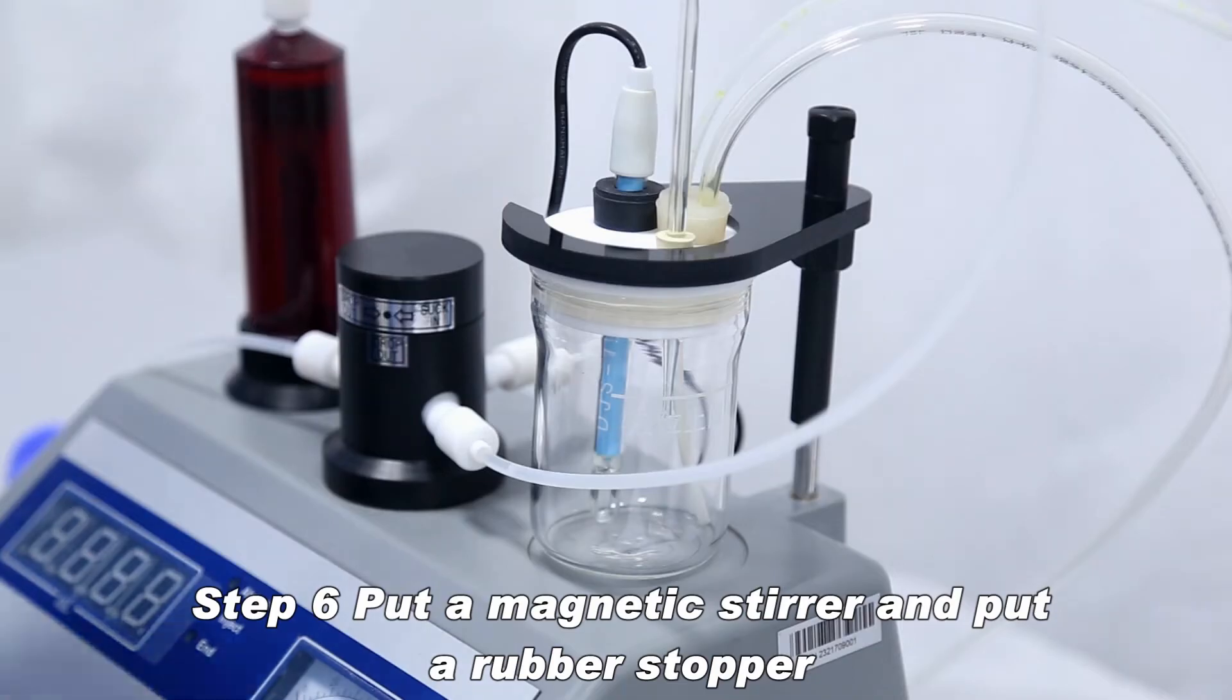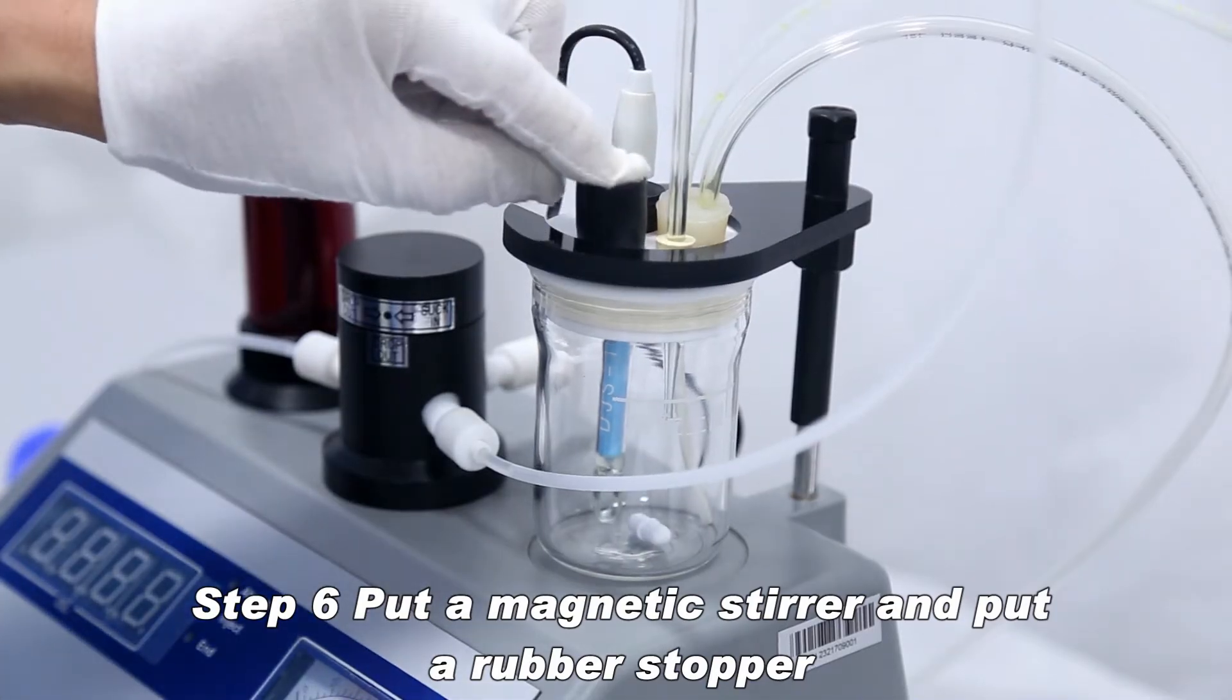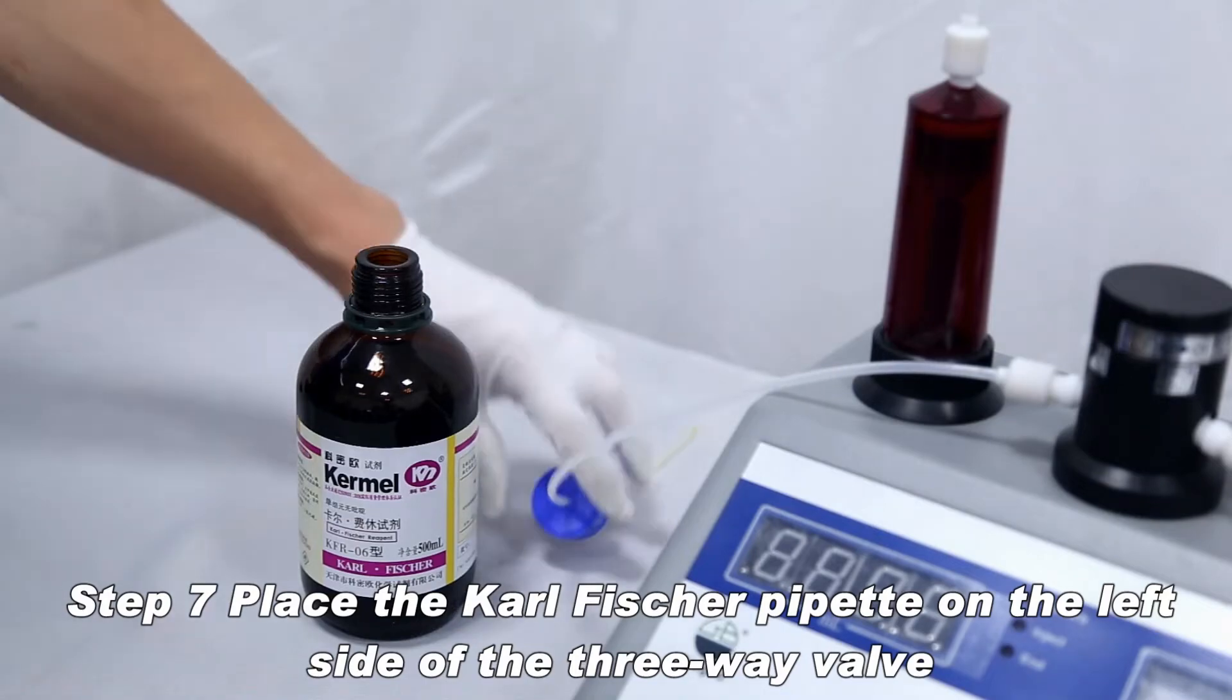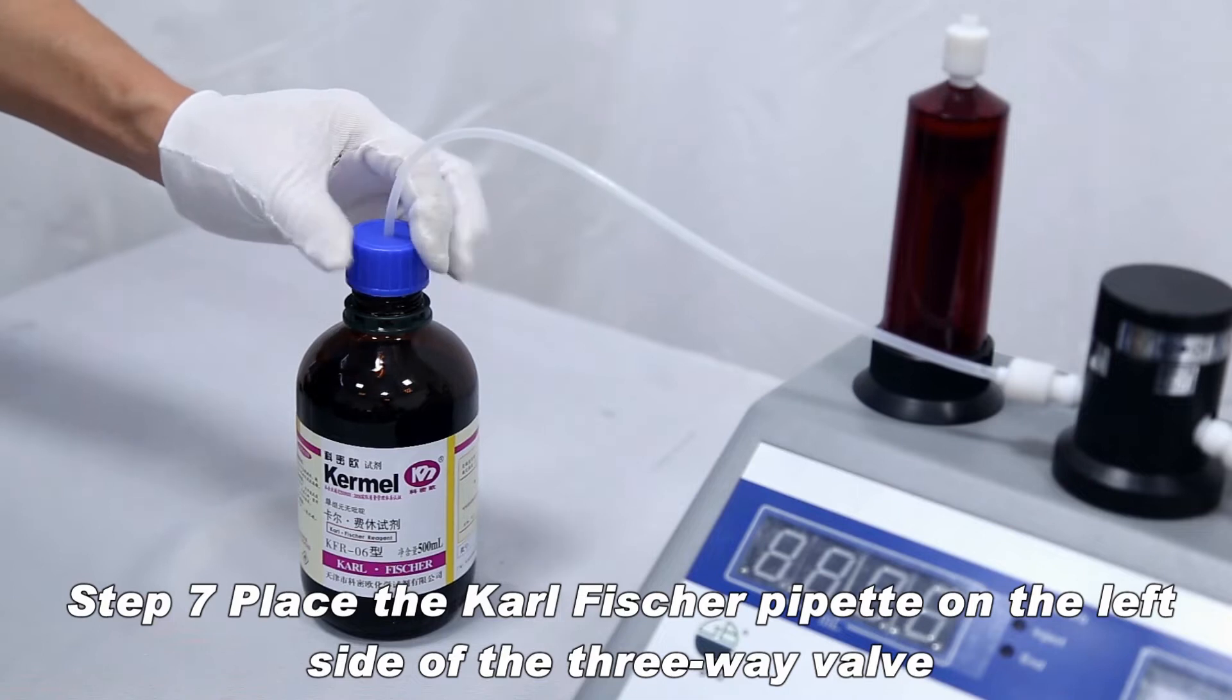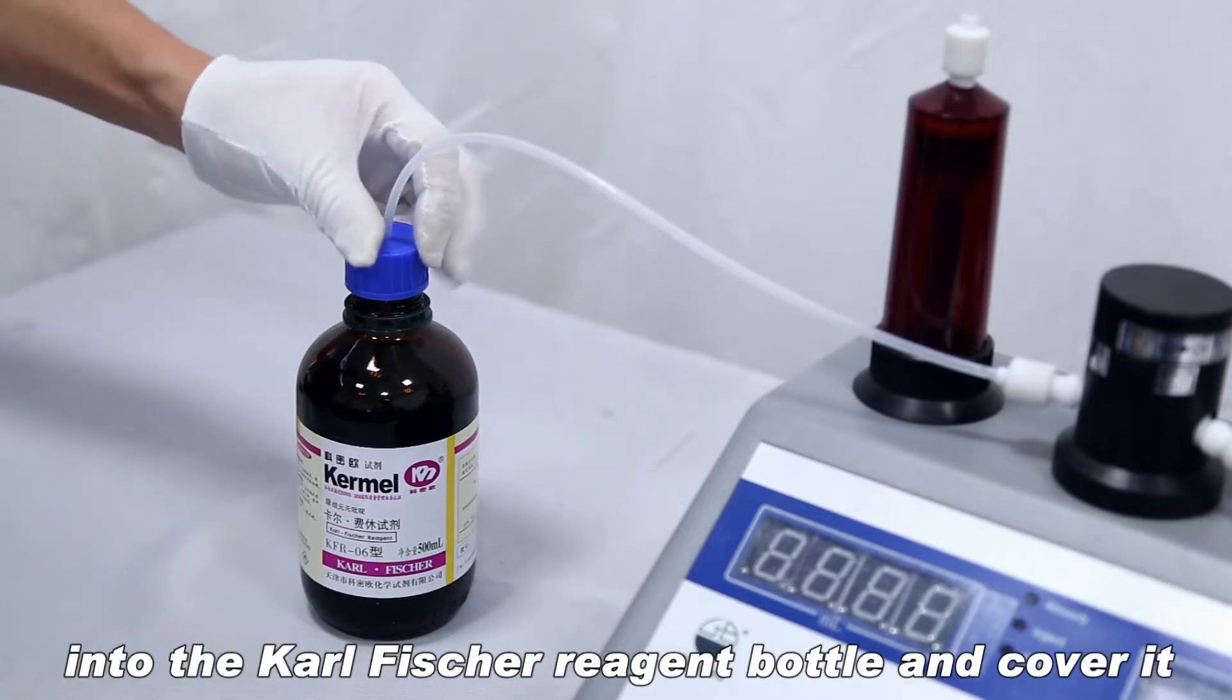Put a magnetic stirrer and put a rubber stopper. Place the Karl Fischer pipette on the left side of the three-way valve into the Karl Fischer reagent bottle and cover it.